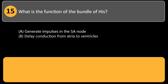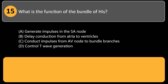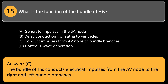What is the function of the bundle of His? A. Generate impulses in the SA node. B. Delay conduction from atria to ventricles. C. Conduct impulses from AV node to bundle branches. D. Control T-wave generation. Answer: C. The bundle of His conducts electrical impulses from the AV node to the right and left bundle branches.